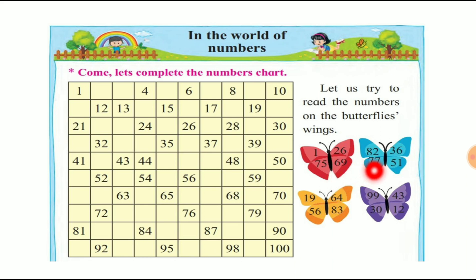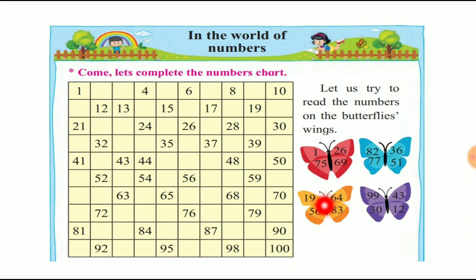Second butterfly: 82, 77, 36, 51. Okay, third butterfly in yellow color: 19, 90, 64, 56, 83.